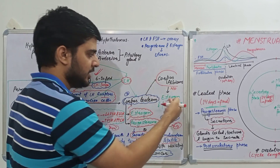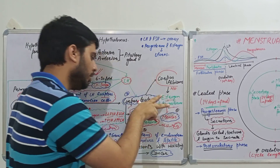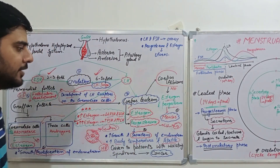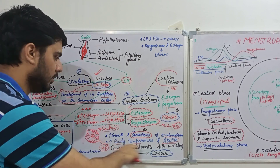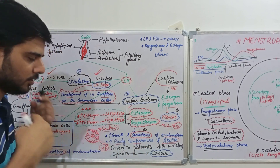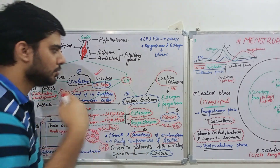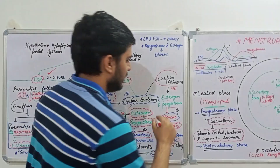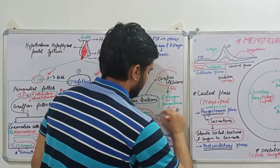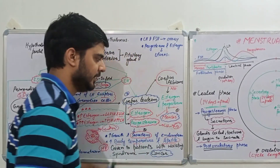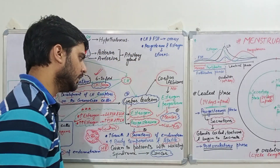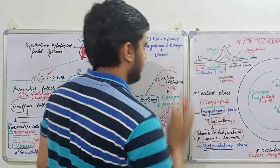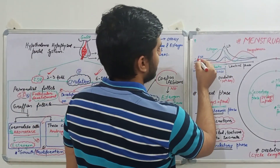Due to withdrawal of these two hormones — which are important for development and maintenance of the uterine lining — when there is withdrawal of estrogen and progesterone, we will see menses, or the per-vaginal discharge of blood. Let me explain this with the help of a graph.